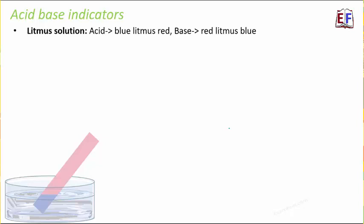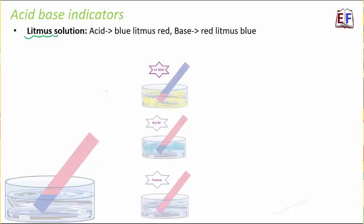The most popular and most common acid-base indicator is the litmus solution. You must have seen the litmus papers — the blue litmus paper and the red litmus paper. The easiest way to test an acid or a base: in an acidic solution, the blue litmus paper turns red. Similarly, just the opposite happens with a basic solution — a red litmus turns blue in a basic solution — and the color doesn't change in a neutral solution. This is how we can test whether a particular solution is acidic, basic, or neutral in nature.